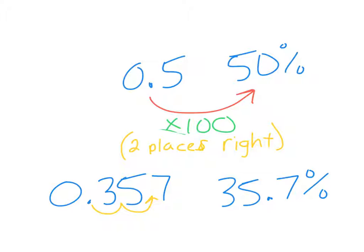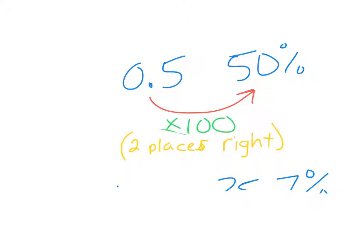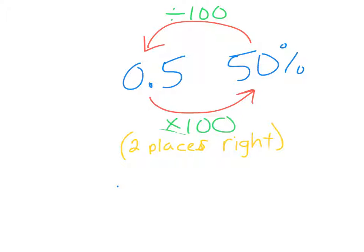We'll see more of this in the next chapter. Now let's look at the other conversion — if I give you a percent and want to know what it is as a decimal, we go in the opposite direction. Starting with 50%, converting to a decimal gives 0.5. Technically we're dividing by 100, and any time we divide by 100, we're moving the decimal two places to the left.